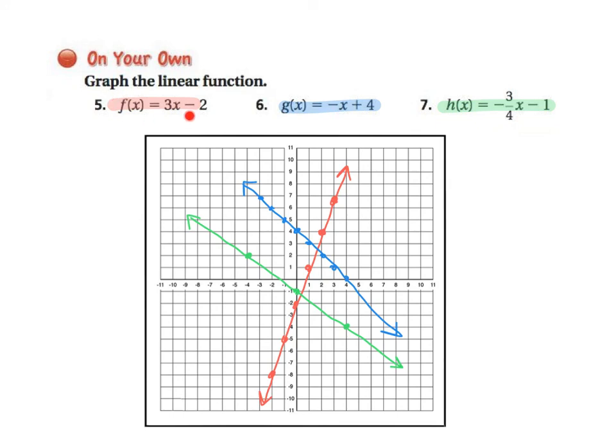Okay, go ahead and check your answers. So you can see that the graph for number 5 is right here. Y-intercept of negative 2, slope of 3 over 1. For number 6, it's this blue graph. Y-intercept of 0, 4, slope of negative 1 over 1.